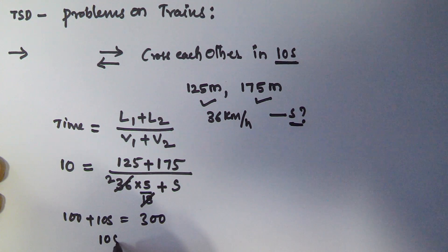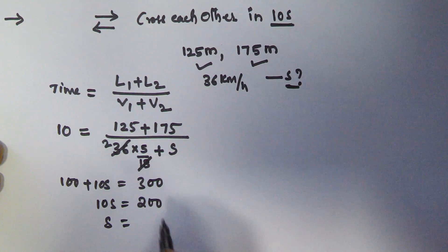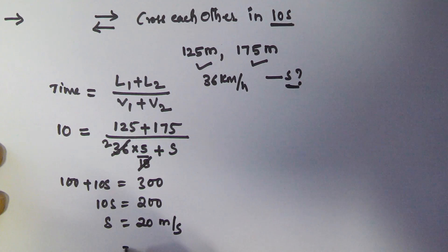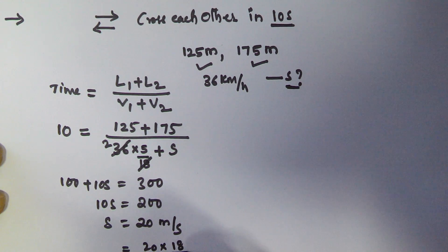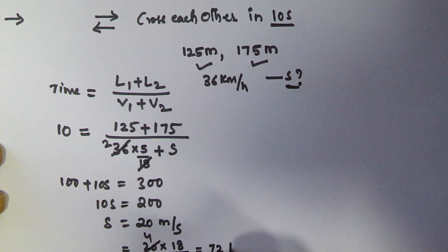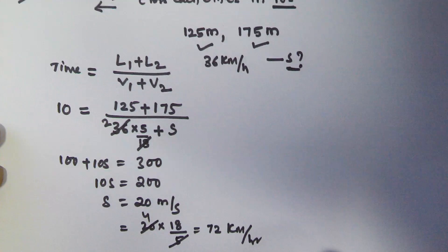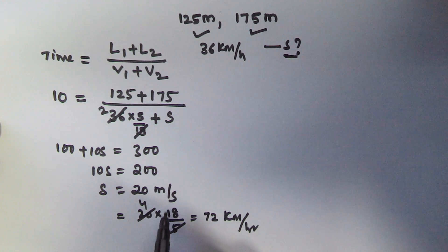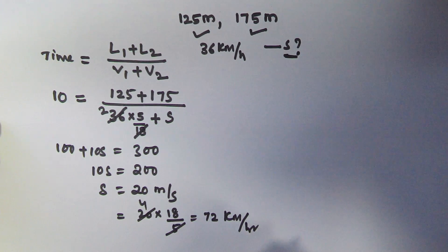So that means 10S equals 200, so speed S equals 20 meters per second. The speed of the second train is 20 meters per second. To convert this into kilometers per hour, we multiply by 18/5, giving 72 kilometers per hour. So the speed of the second train is 72 kilometers per hour.